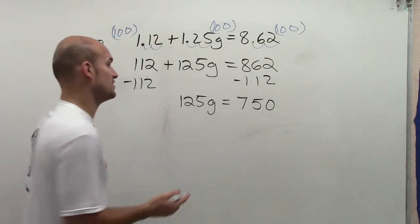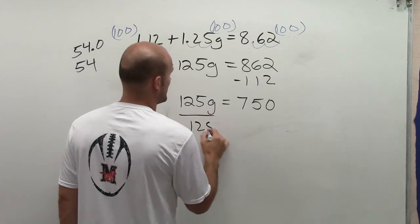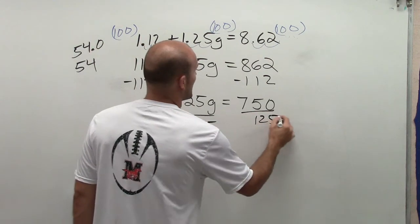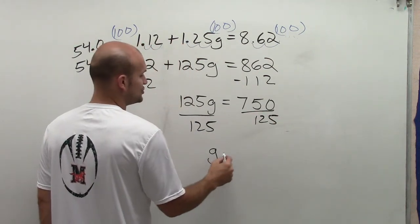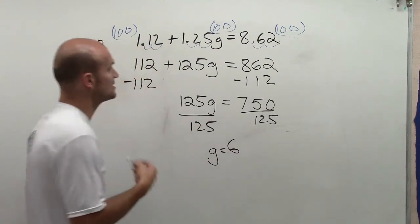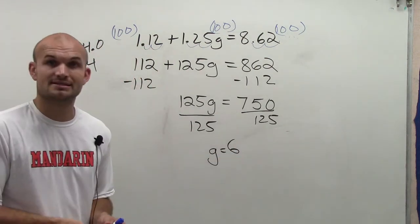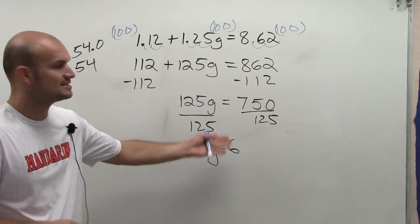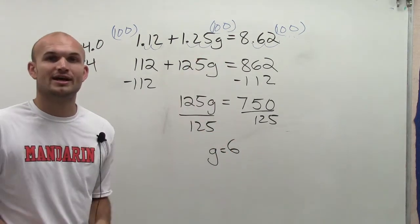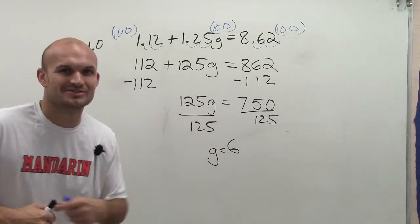Now, to get my variable by itself, I need to divide by 125 on both sides. And what I get is g is equal to 6. Therefore, the value of g that's going to make this equation true is 6. You can plug it back in, check your answer, and there you go. Thanks for watchin'.